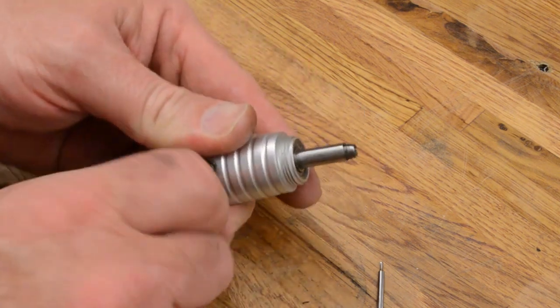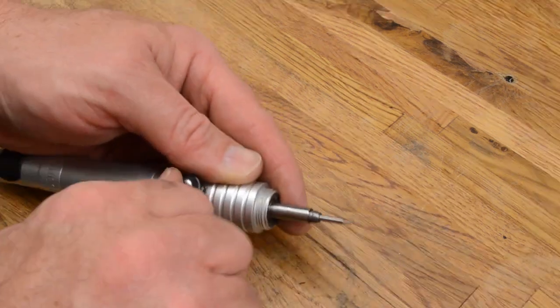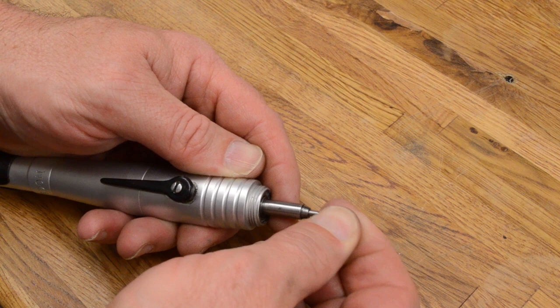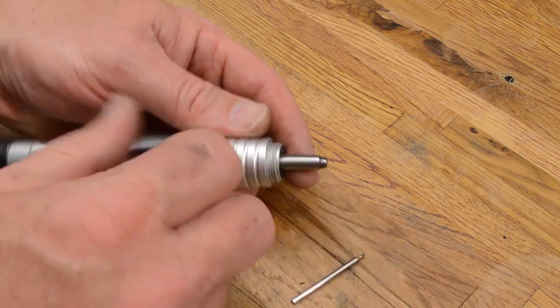So what I can do is I'll open this up, I'll stick my bit in, I'll close it, and I'll see if it pulls out. See, this is still loose. All right?